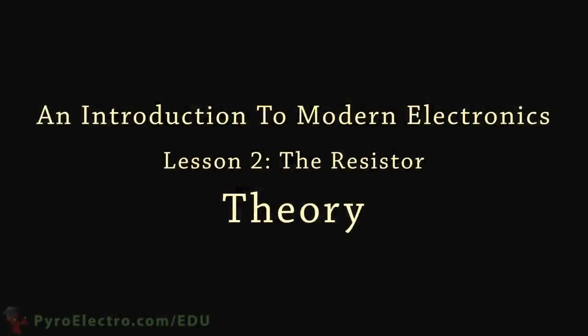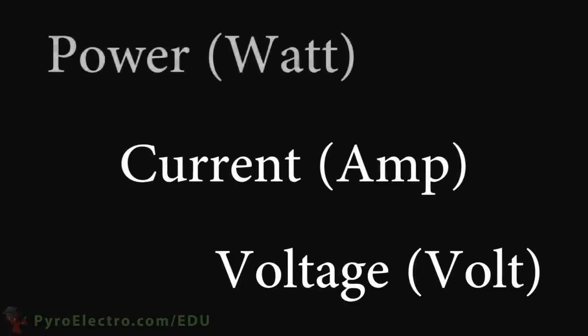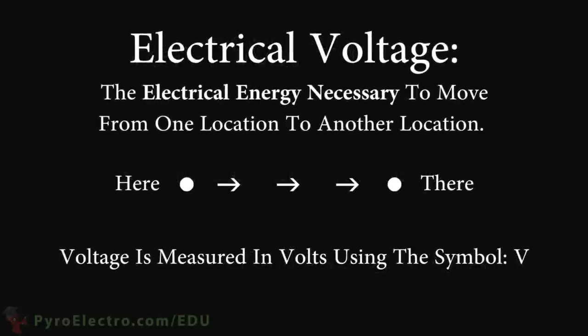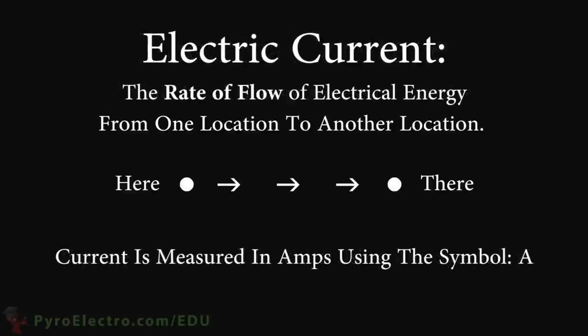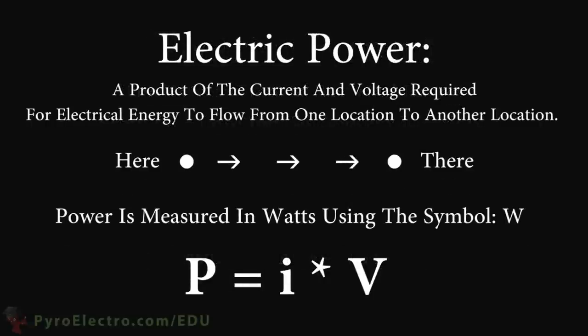Electricity has three properties that we use to describe the theory of what is happening: voltage, current, and power. Electrical voltage, measured in volts, is the amount of energy necessary to move electrical charges from one point to another. Electrical current, measured in amperes or amps for short, is the rate at which electrical charges move from one point to another.